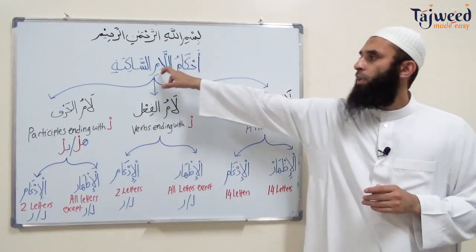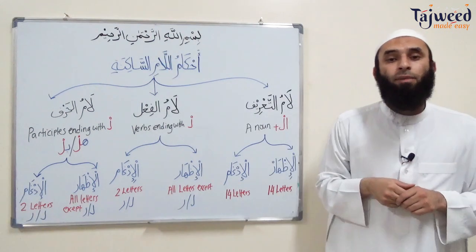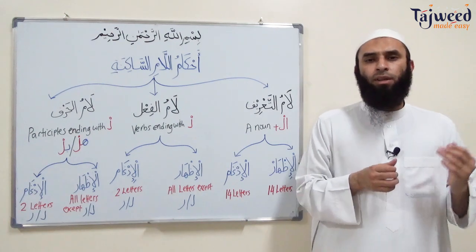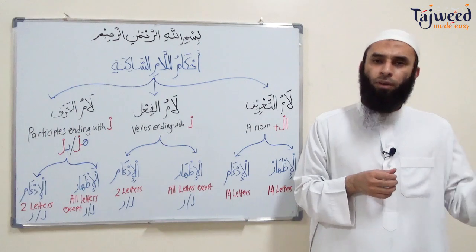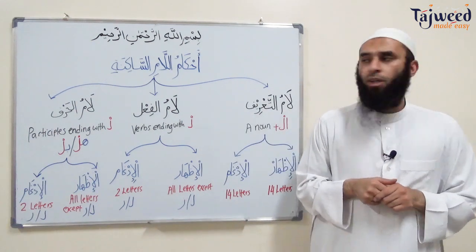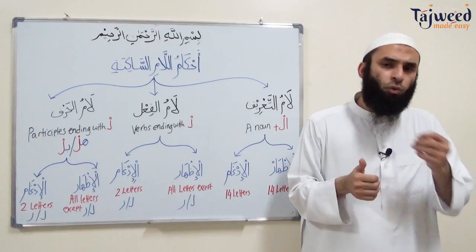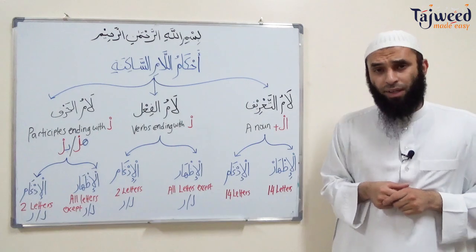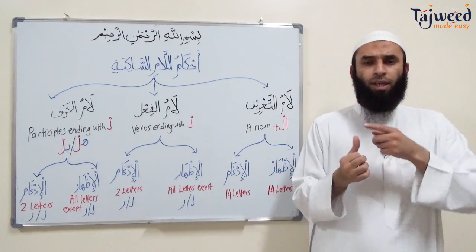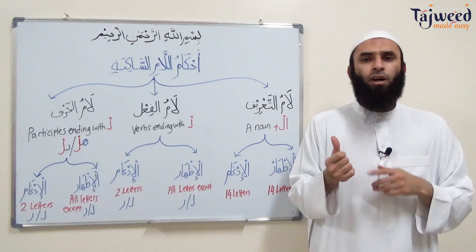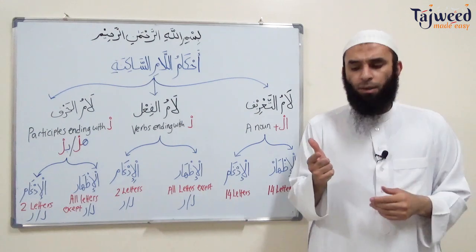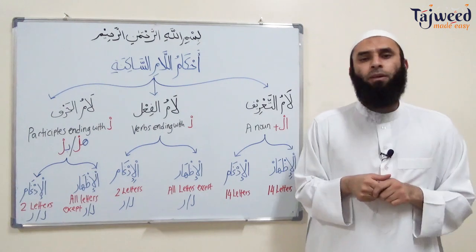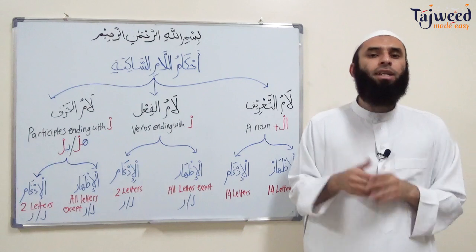In today's lesson we're going to look at the أحكام اللام الساكنة - the rules of اللام الساكنة. Just like the نون الساكنة, when the لام has a سكون, depending on which letters come after, they will affect its pronunciation. A word in the Arabic language can be of three categories: a noun (names of places, things, and people), a verb (actions with time), or a participle (a word that points out the meaning of another word).